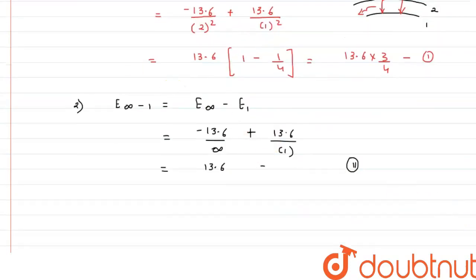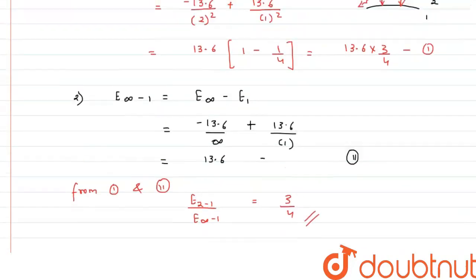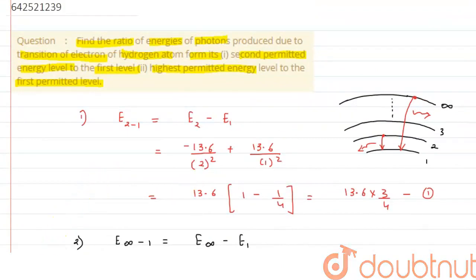And if we take the ratio of 1 and 2, that is what we have been asked to calculate. From 1 and 2, energy from 2 to 1 and energy from infinity to 1, that gives us the answer as 3 by 4. This is the answer to the question. I hope you have understood the concept and thank you for watching.